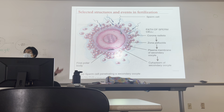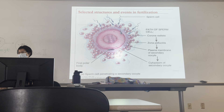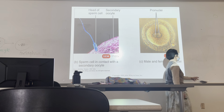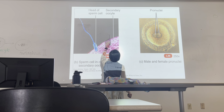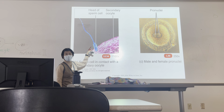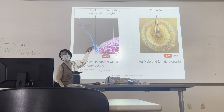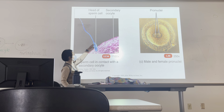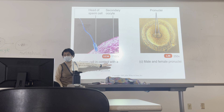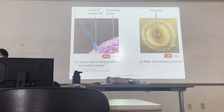If two sperm fertilize the same egg, it won't be viable — you will miscarry, because it's not human. The contribution of the dad is just the chromosomes — only the head of the sperm enters. Everything else comes from the mom. That explains mitochondrial DNA testing in forensics: it always traces to the mom because no organelle comes from the dad. The dad only gives 23 chromosomes.